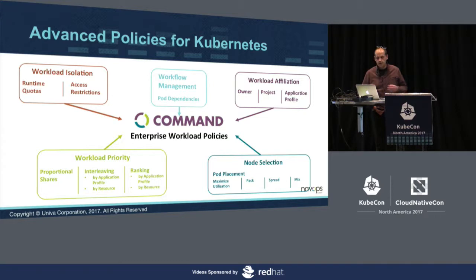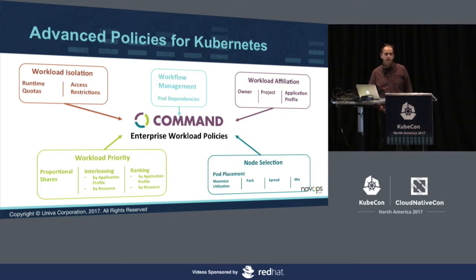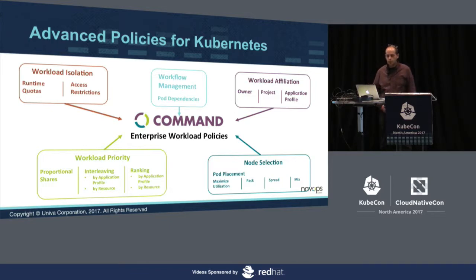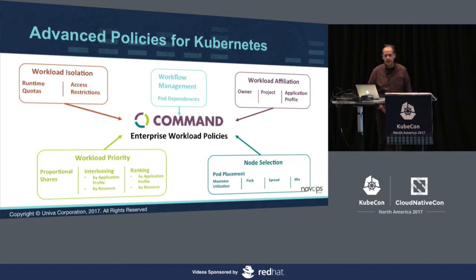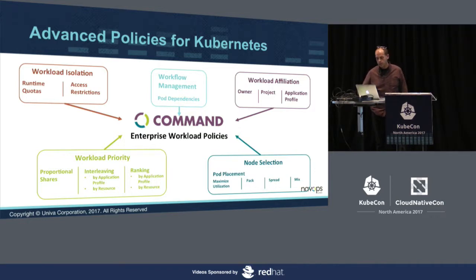We also have node selection criteria — for instance, maximize utilization. As opposed to just doing spread or pack, we actually look at resource consumption and place workloads where there is the best use of resources for those workloads. And then the most important thing is workload priority — we provide many ways of putting priority on your workloads and then making decisions about where to place them based on that priority. A pretty important one of those is what we call proportional shares.